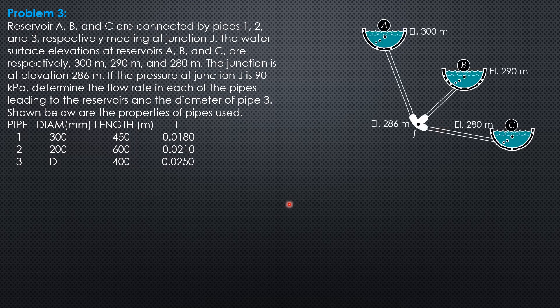So this is the figure. To solve this problem, first given the elevation at junction J and the pressure there, then we can locate the piezometric level. Knowing the elevation of the piezometric level, then we can compute the head losses in each of the pipes. So first let's locate the elevation of the piezometric level at junction J and it is equal to 286 plus pressure head which is 90 over 9.81. So 286 plus 90 over 9.81 is 295.17. Then we can now draw the energy grade line at elevation 295.17.